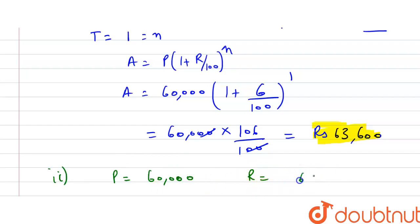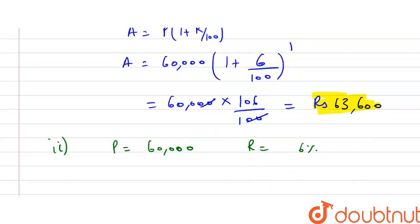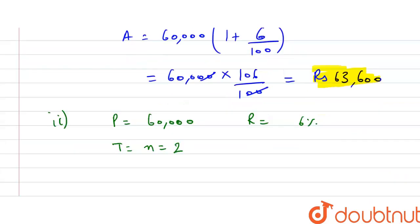6%. The time period becomes: for half-yearly we calculated n=1, so for one year it will be n equals 2. So using the formula again: Amount equals Principal times (1 plus rate of interest divided by 100) raised to the power n.